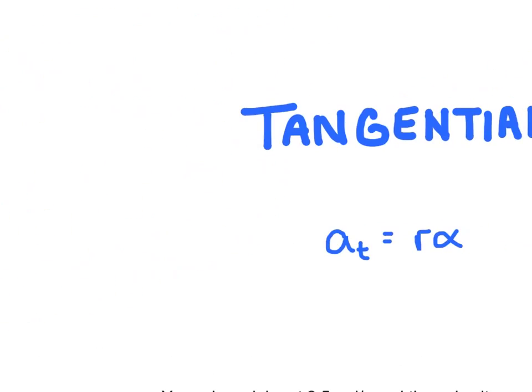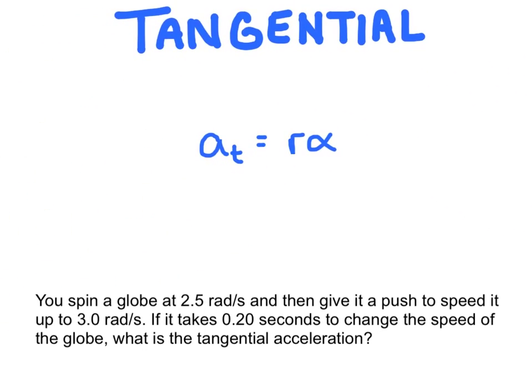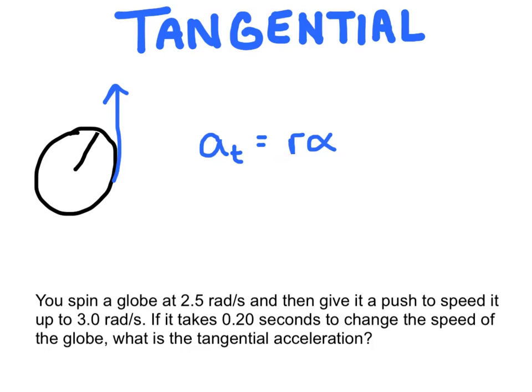Now let's look at tangential acceleration. Tangential acceleration is directed tangent to the circle. We base it on the angular acceleration and simply multiply the angular acceleration by the radius of the circle. The radius converts the angular motion into a linear version, essentially.